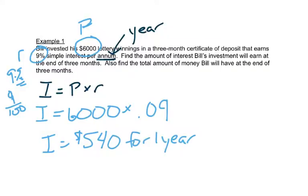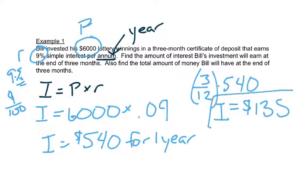But he didn't do it for a whole year. He did it for three months. So we have to figure out how much of a year is three months. So 3 out of 12 months, right? So it's 3 out of 12 for a whole year, times 540. So you can do that in your calculator. 3 divided by 12 times 540. And that gives us the interest of $135. So in three months, he gets $135 interest.